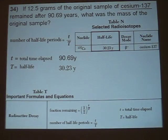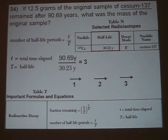So when we divide 90.69 by 30.23, we get three half-life periods. We can represent this by drawing three arrows: one, two, and three. Those represent the number of half-life periods.